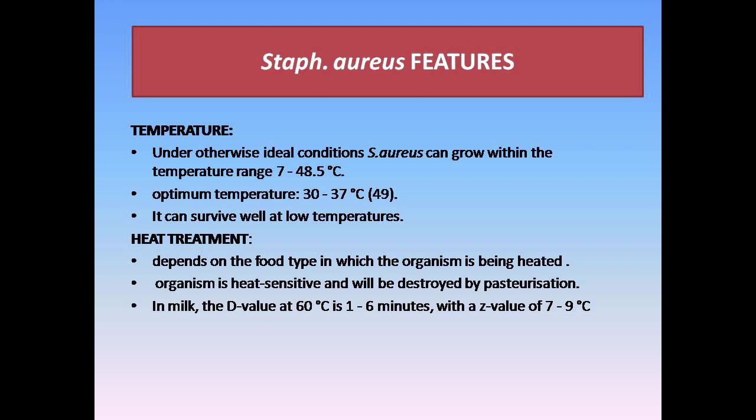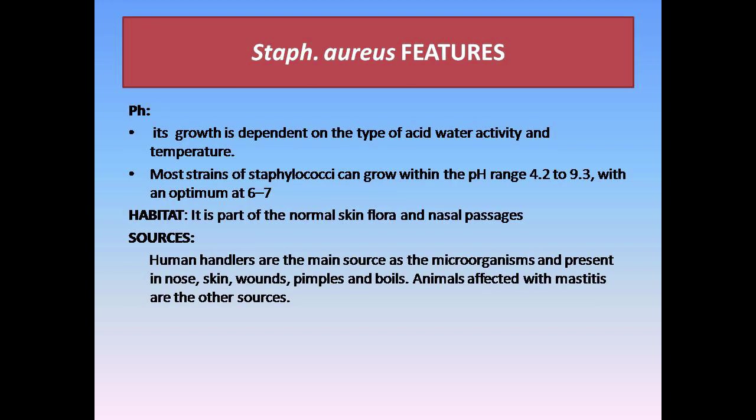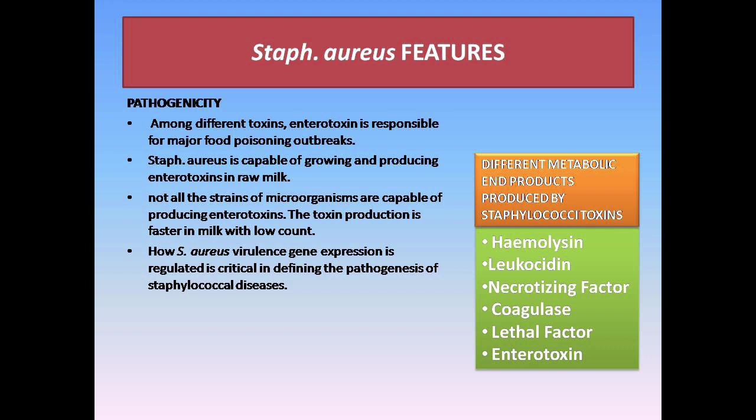The ability of Staphylococcus aureus to tolerate heat depends on the food type in which the organism is being heated, and they can be destroyed by pasteurization. The pH requirement for S. aureus to grow is 4.2 to 9.3, whereas the optimum pH requirement is 6 to 7. The habitat for S. aureus is part of normal skin flora and nasal passages. S. aureus pathogenicity involves different toxins.